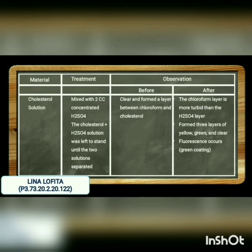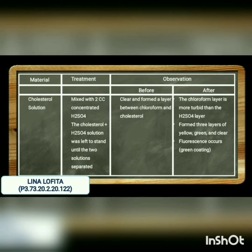There are 3 columns in the results table: material, treatment, and observation. The observation column is divided into before and after. For the material column, there is cholesterol solution. In the treatment column, the sample is mixed with 2 cc concentrated H2SO4 and left to stand until the two solutions separate. In the observation before column: clear, forming a layer between chloroform and cholesterol. In the after column: the chloroform layer is more turbid than the H2SO4 layer, forming 3 layers of yellow, green, and clear, with a fluorescent green coating.